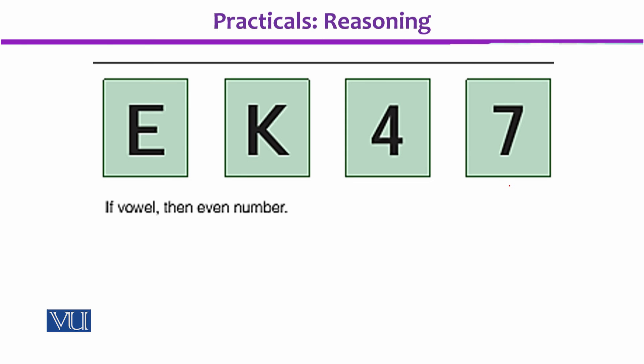If vowel, then even number. So people will say that you should check E and you should check 4, then the rule will be verified.